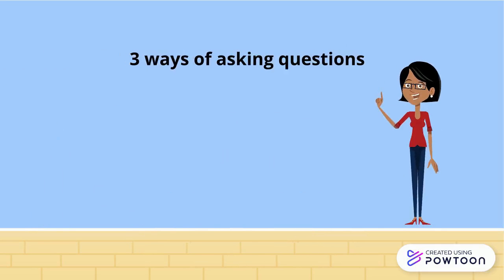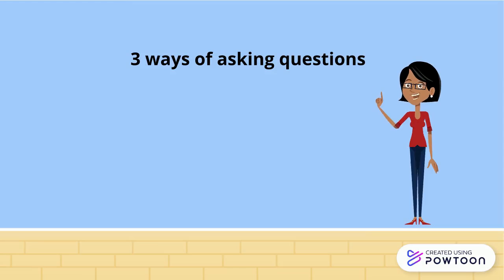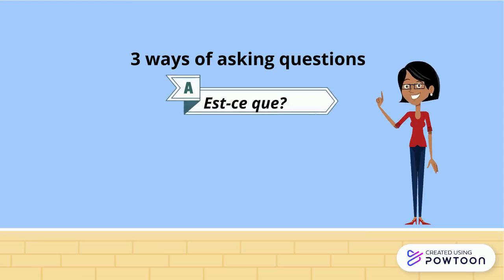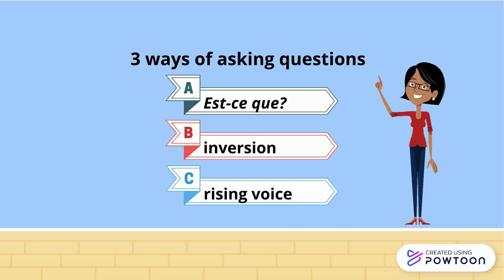There are three ways of asking questions in French. They depend on the context: with the expression est-ce que, with the inversion of the verb and the subject, and with the voice rising at the end of the question.